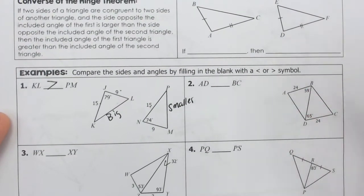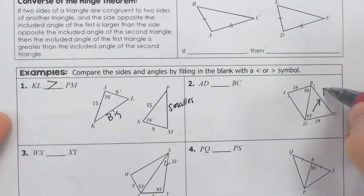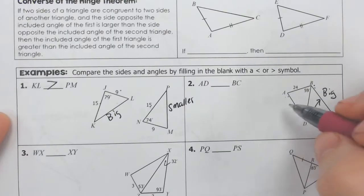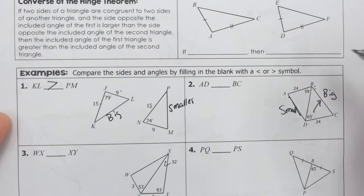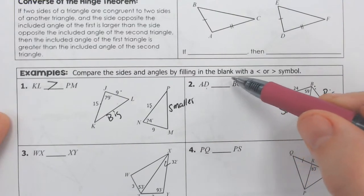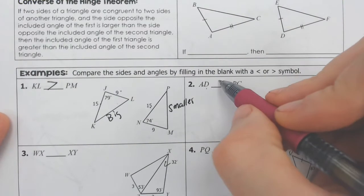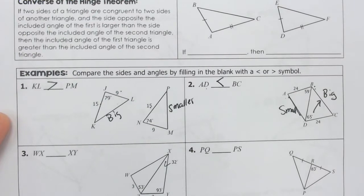AD compared to BC. So AD is here, BC is here. Well, BC is across from 65, which means BC has to be bigger, and that means AD has to be smaller, and it starts with AD. So AD has to be smaller than BC. Well, if AD is smaller, it has to be less than.